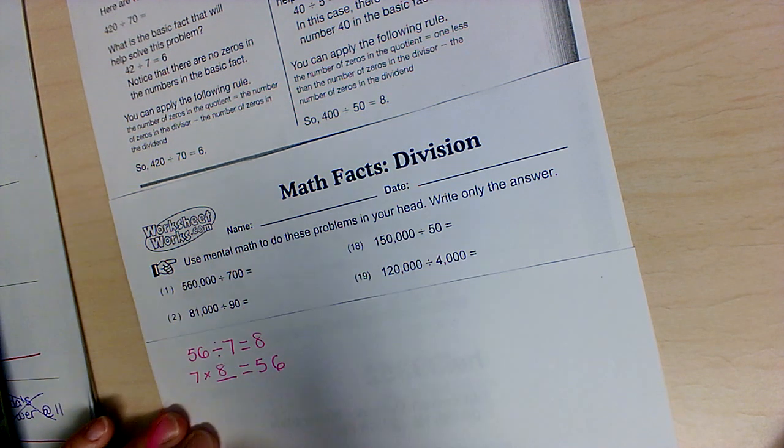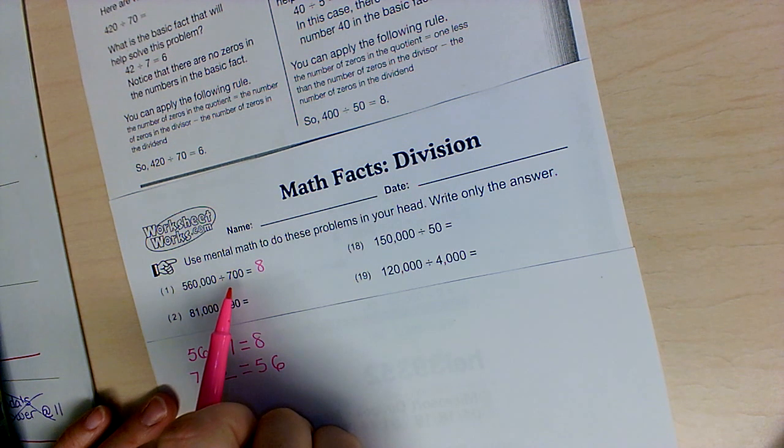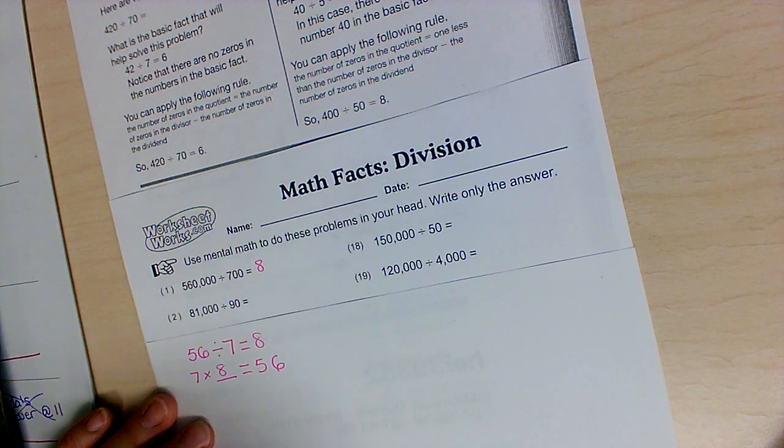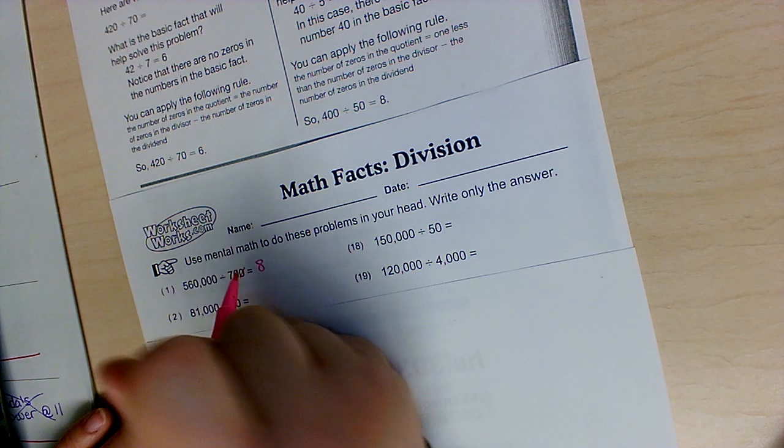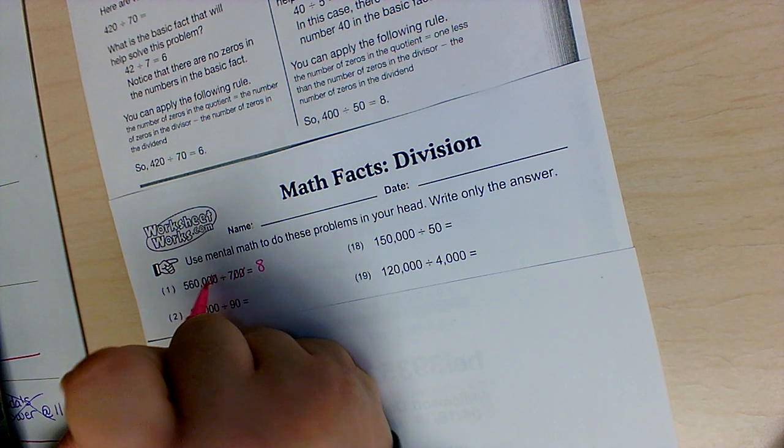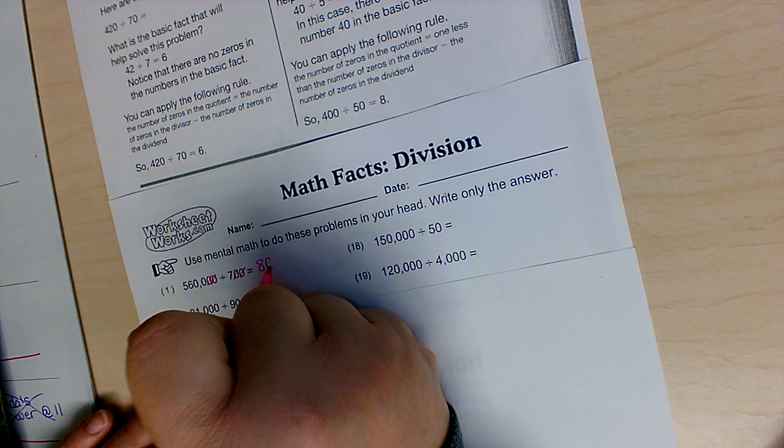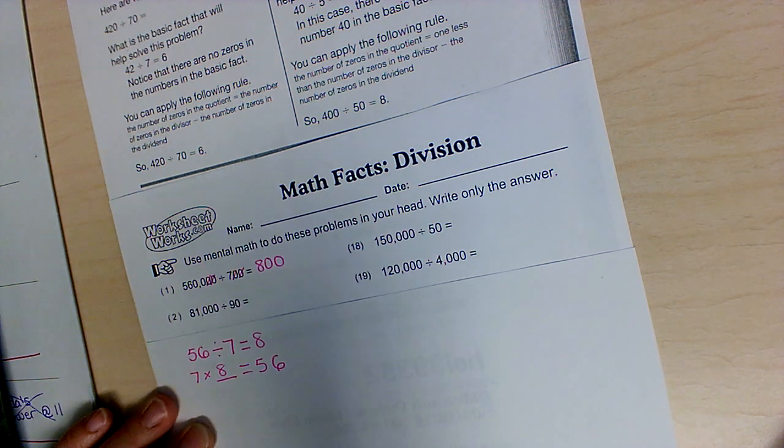Now we have to figure out how many zeros. So there are 2 in our divisor, so to help me remember, I'm just going to cross them out. So 2, then I go over here and cross 2 out, and I have 2 zeros left, so my answer is 800.